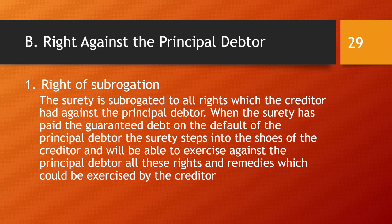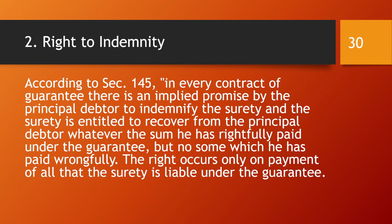Next are the rights against the principal debtor. Once the debt has been paid by the surety, the surety becomes the creditor for the debtor, so all the rights of the creditor are transferred to the surety against the principal debtor. The first right is the right of subrogation: the surety is subrogated to all rights which the creditor had against the principal debtor. When the surety has paid the guaranteed debt, he steps into the shoes of the creditor.